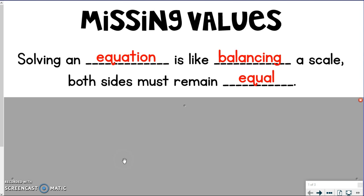When solving an equation, it's like balancing a scale. Both sides must remain equal. That means whatever you do to one side, you have to do to the other side. That's the whole point of the equal sign. That's what makes both sides equal.